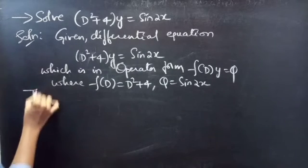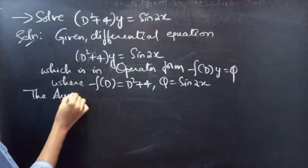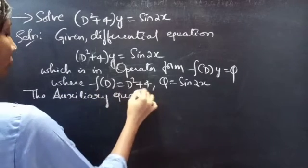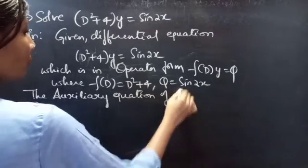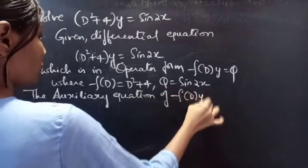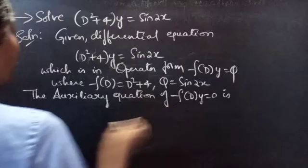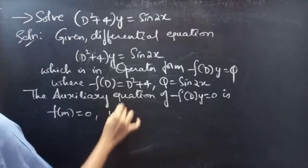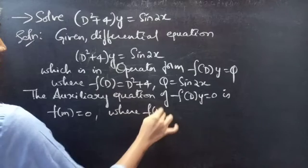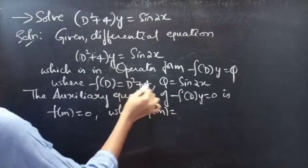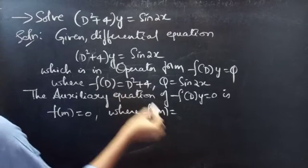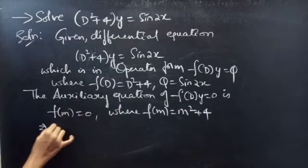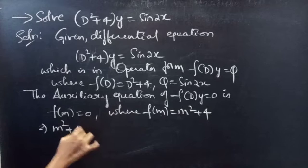The auxiliary equation of f(D)·y = 0 is f(m) = 0. Since f(D) = D² + 4, replacing D with m gives f(m) = m² + 4. So our auxiliary equation becomes m² + 4 = 0.